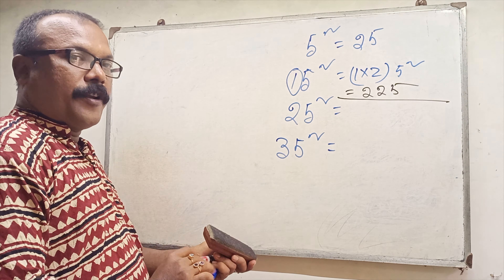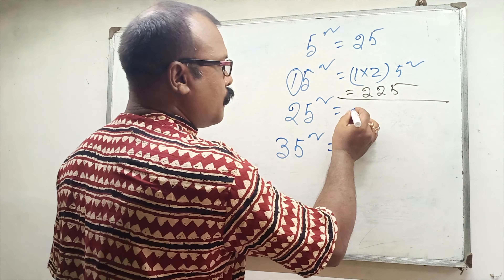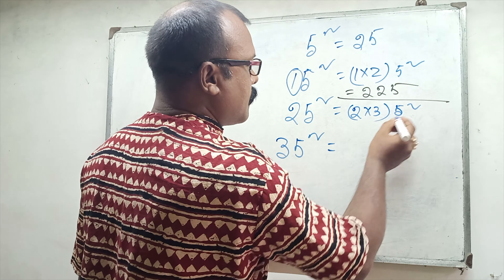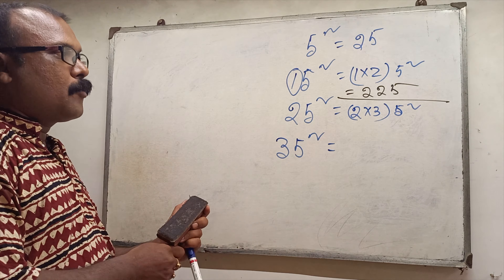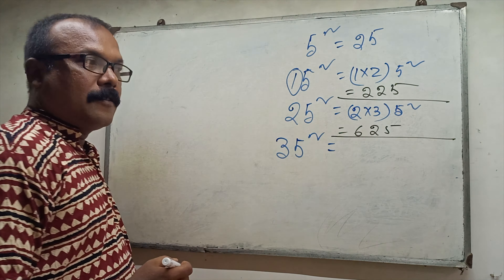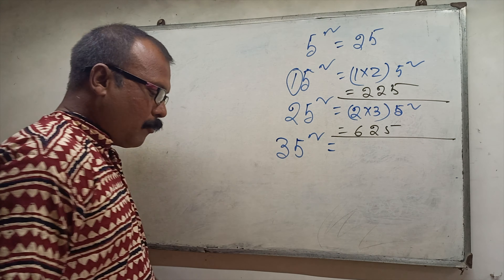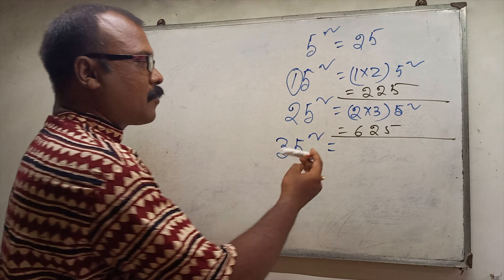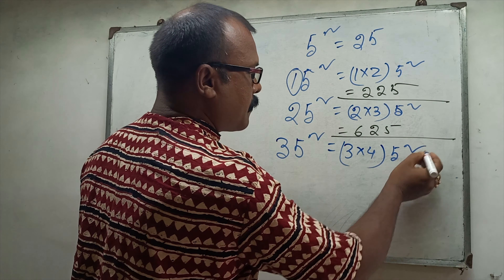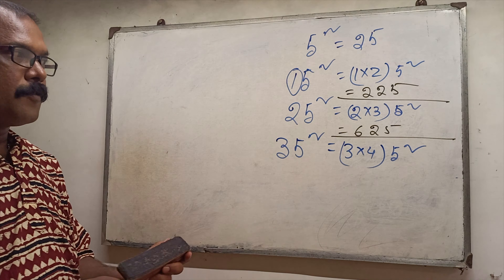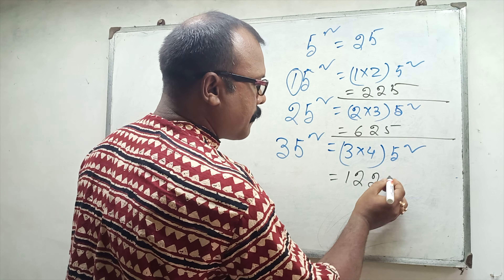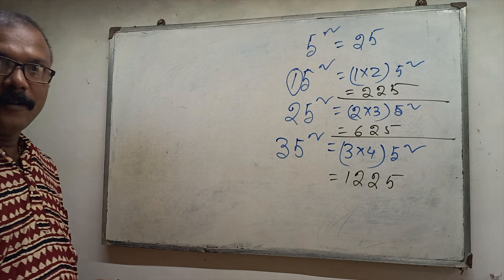Next, 25 squared: 2 into 3, and 5 squared. So 2 into 3 is 6, and 25. So 35 squared: 3 into 4, and 5 squared. So 3 into 4 is 12, and 25. Clear.